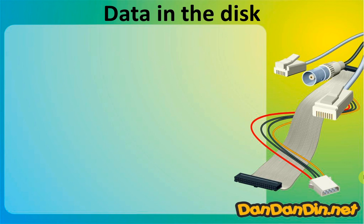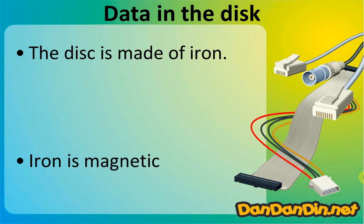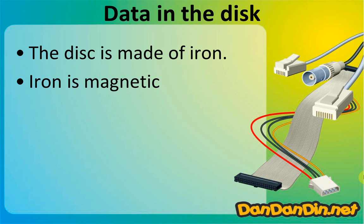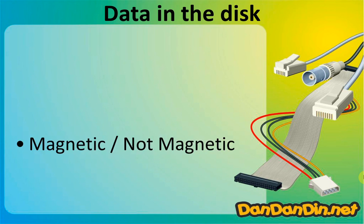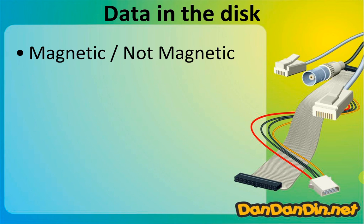The disk is made of iron — not really iron, it is a ferromagnetic material. It is magnetic and there are many sectors. Every sector can be magnetized or not, so there are only two states: magnetized or not magnetized, which means 1 or 0, true or false.